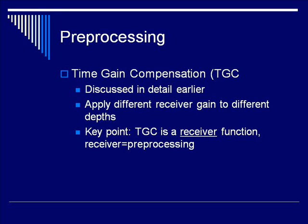There are two things I'd like to discuss which are strictly the domain of preprocessing. The first one you're very familiar with is time gain compensation. We've discussed it in detail earlier in the lecture series. Time gain compensation is just applying different receiver gains to different depths in the image. The key point to remember is that time gain compensation is a receiver function, and because it's a receiver function, it's preprocessing.